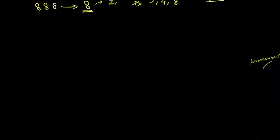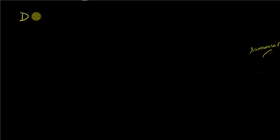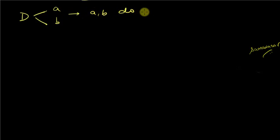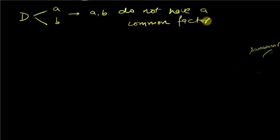Now, if I want to find out whether a number is divisible by D, I can find two factors A and B of D that do not have a common factor between them. If the number N is divisible by both A and B, it will be divisible by D.